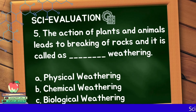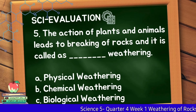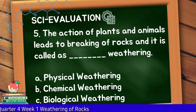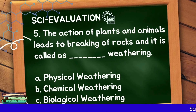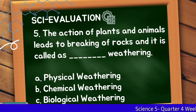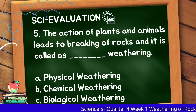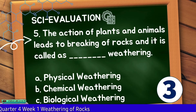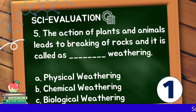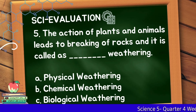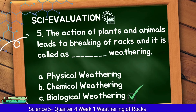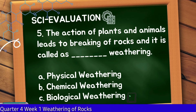Number 5: The action of plants and animals leads to breaking of rocks and it is called blank weathering. Letter A: Physical Weathering, Letter B: Chemical Weathering, Letter C: Biological Weathering. Very good! The correct answer is Letter C, Biological Weathering.